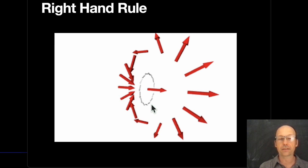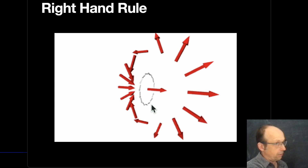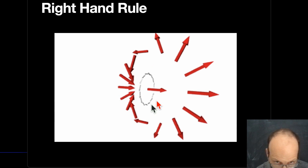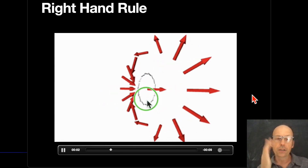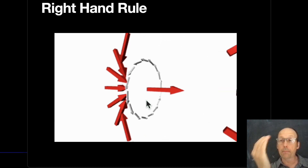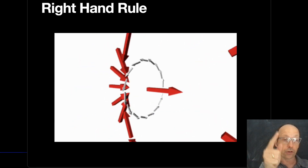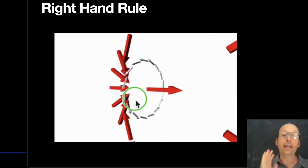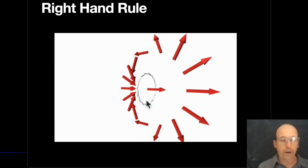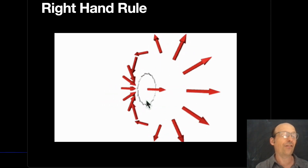We need the right-hand rule, because when electric currents make magnetic fields, we need to know the direction. If you have a loop of current, it makes a dipole magnetic field. If you take your right hand and let your fingers curl in the direction of the electric current, your thumb will point in the direction of the magnetic field through the center of the loop.